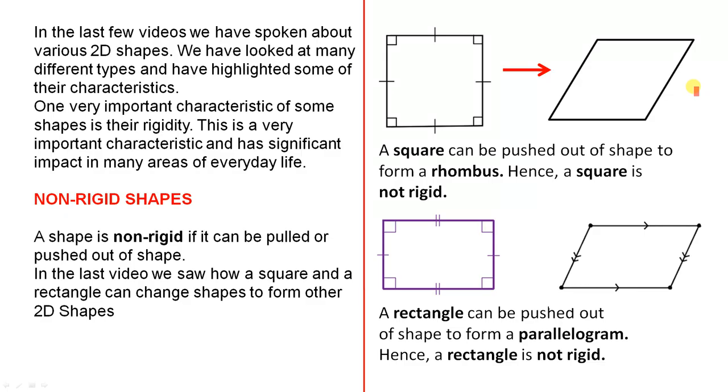A square can be pushed out of shape to form a rhombus. Hence, a square is not rigid. A rectangle can be pushed out of shape to form a parallelogram. Hence, a rectangle is not rigid.